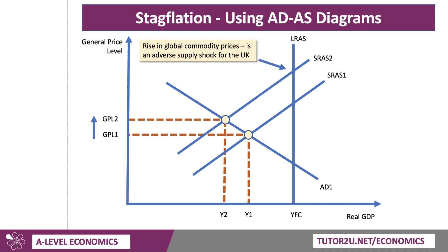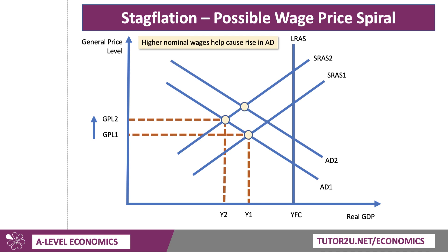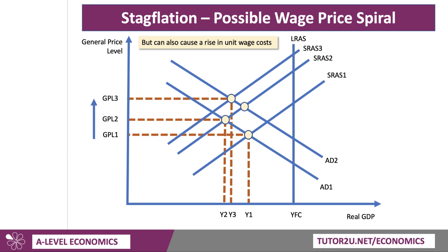That causes a fall in real output and an increase in the general price level, as shown in the diagram. One of the consequences of the rise in inflation is that there's a wage-price response. So people bid for higher wages — they may well get them, particularly if they have strong union power. And higher nominal wages in response to higher prices causes an increase in aggregate demand. But equally, higher wages cause an increase in unit wage costs. So if wages are rising faster than productivity, the unit labour cost will go up — again causing aggregate supply to shift. I've shifted it to SRS3. So you can see here that we have another increase in inflation, and growth is slower because the rise in demand is offset by the rise in prices and costs.